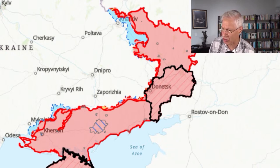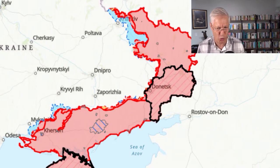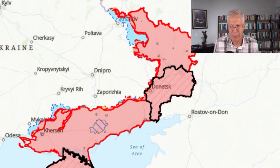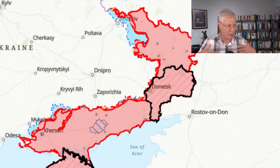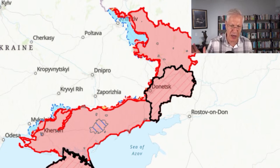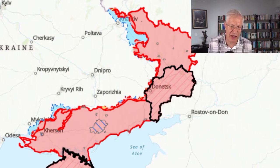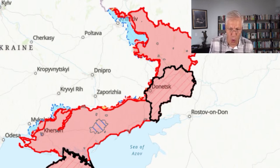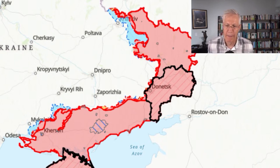Whatever advances are happening here are very, very slow so far. However, one thing you can't see in this map is that just south of Kherson there's a river that goes to the Black Sea in the west and up through the east. That is the river you've been hearing about where the Ukrainians have been bombing all the bridges. Bombing those bridges prevents the Russians from continuously bringing in new troops into the Kherson area.